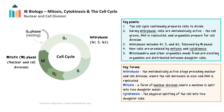During G2 phase, the cell continues to grow and produces the proteins and organelles necessary for mitosis. The cell also undergoes final preparations for division, ensuring all components are ready for the mitotic phase. During M phase, or mitosis, cell division actually occurs, including both mitosis and cytokinesis. Mitosis is the process by which the cell's nucleus divides, distributing the replicated chromosomes into two daughter nuclei. Cytokinesis follows, dividing the cytoplasm and cell membrane to form two separate identical daughter cells.